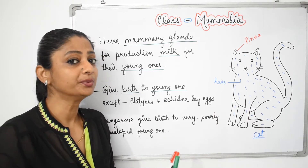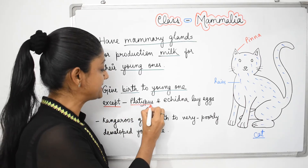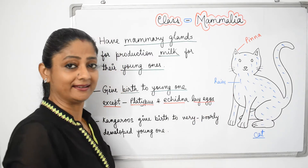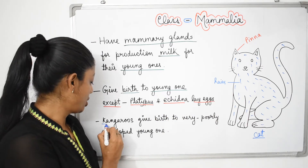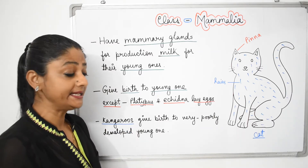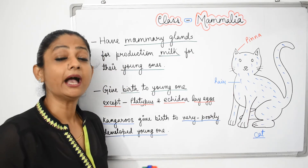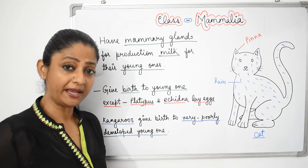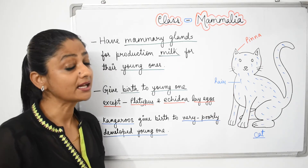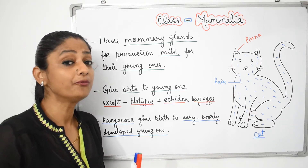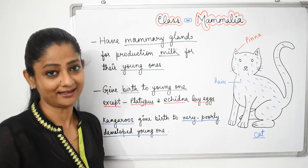But there are exceptions — platypus and echidna lay eggs. These two, even though they are mammals, lay eggs. Kangaroo is also a mammal and gives birth to young ones, but it gives birth to very poorly developed young ones. That is why you will see that in the lower portion of a kangaroo's body there is a pouch where it keeps its poorly developed baby. The baby sucks milk from there and slowly develops until it is fully developed. Kangaroo does not separate its baby from its body — it doesn't let it out of the pouch.